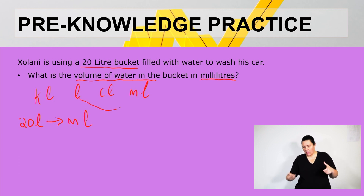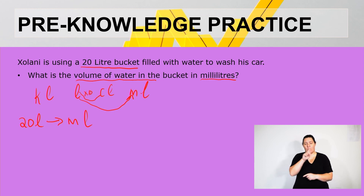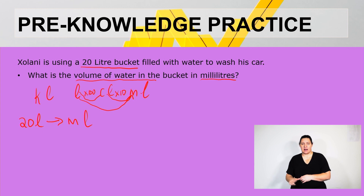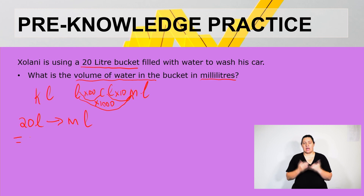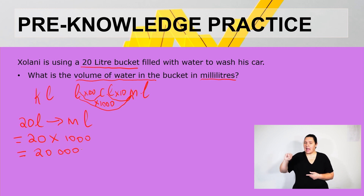We are moving from liters going to milliliters. From a liter to centiliters you multiply by one hundred, and from centiliters to milliliters you multiply by ten. This makes the conversion from liters to milliliters a multiplication by one thousand. So we say 20 multiplied by one thousand, which gives us 20,000 milliliters.